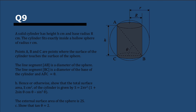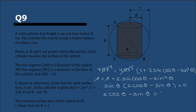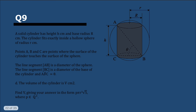The external surface area of the sphere is 4πr², and it equals 2S. Setting 4πr² = 2 × 2πr²(1 + 2 sin θ cos θ − sin²θ), we can cancel 2πr² from both sides to get 1 = 1 + 2 sin θ cos θ − sin²θ. Crossing out the 1s: 2 sin θ cos θ − sin²θ = 0. Factoring out sin θ: sin θ(2 cos θ − sin θ) = 0. Dividing by cos θ gives tan θ = 2.